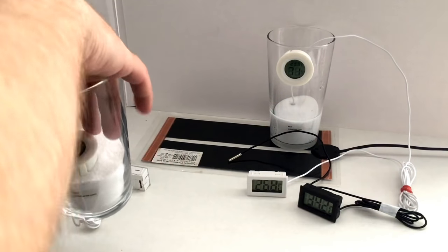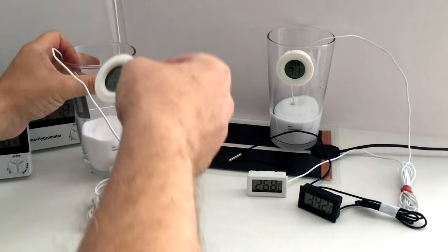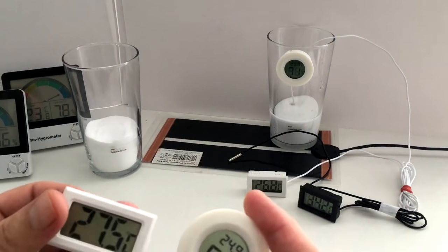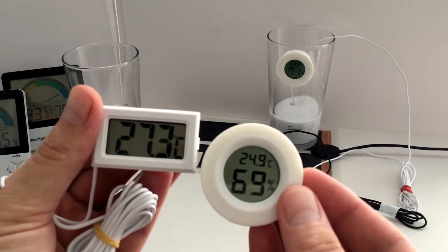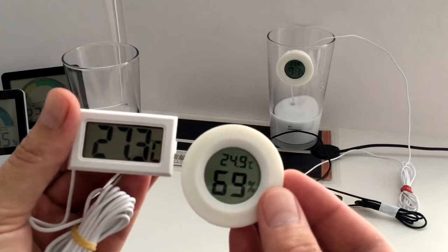So here we have two readings from one glass. So the surface, on the left we've got the probe that was in the sand, 27.3. Then we've got 24.9 was on the surface.